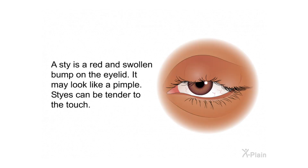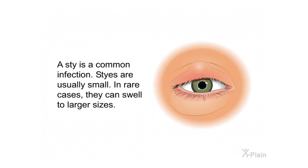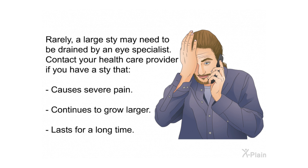A stye is a red and swollen bump on the eyelid — it may look like a pimple. Styes can be tender to the touch. A stye may form on either the top or bottom eyelid and may point inward toward your eye or outward. It is possible to have more than one stye at a time. Styes are usually small, but in rare cases they can swell to larger sizes. A stye usually goes away on its own or with home treatment. Rarely, a large stye may need to be drained by an eye specialist. Contact your health care provider if you have a stye that causes severe pain, continues to grow larger, or lasts for a long time.